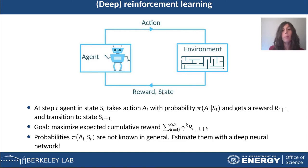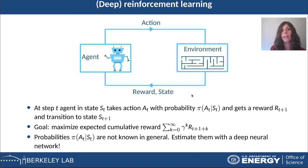For example, consider a robot that has to learn to escape from a maze in the smallest amount of time. In this case, the agent is the robot, the environment is the maze, and the states of the environment are the positions inside the maze, also including the surroundings.